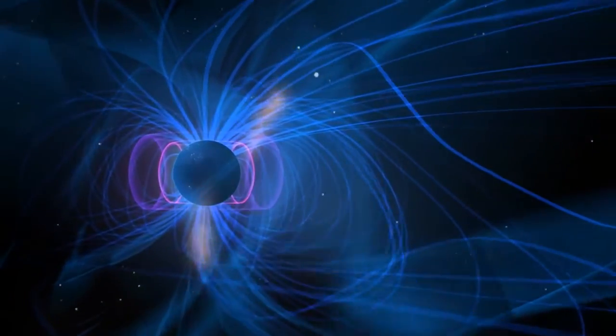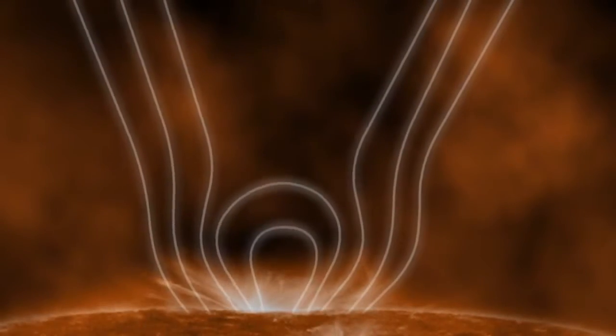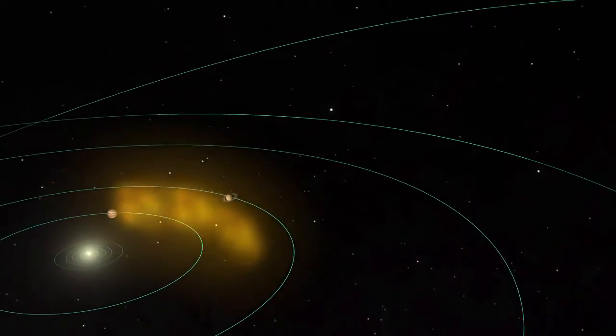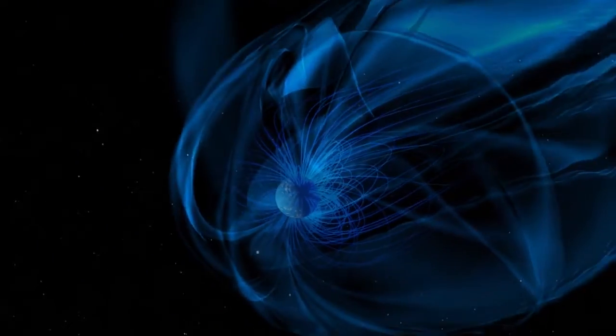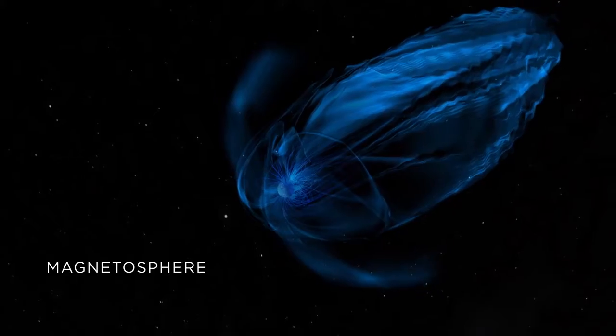It's pervasive in the universe. It happens on the Sun, around Earth, and flings particles across the solar system. Scientists have observed this phenomenon many times in the magnetosphere, Earth's vast magnetic environment.